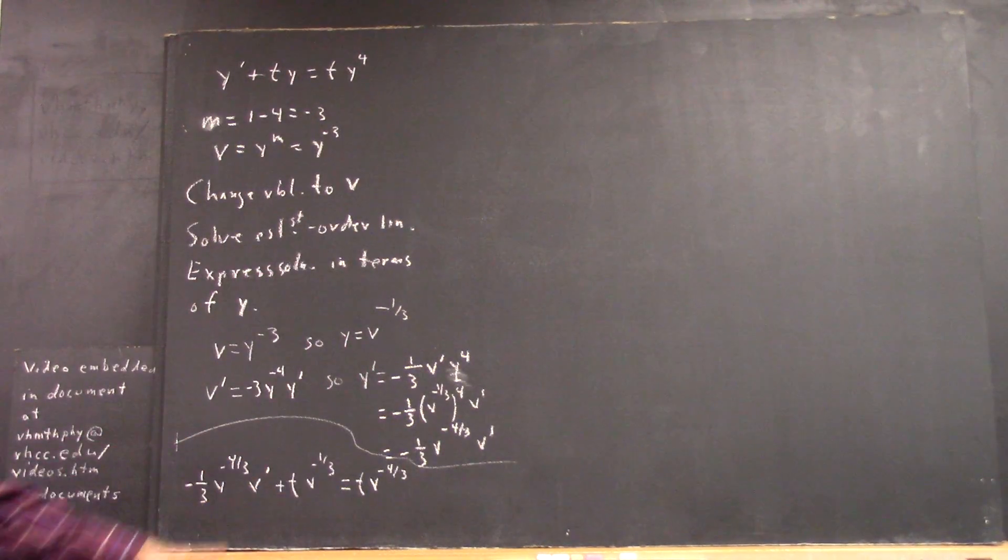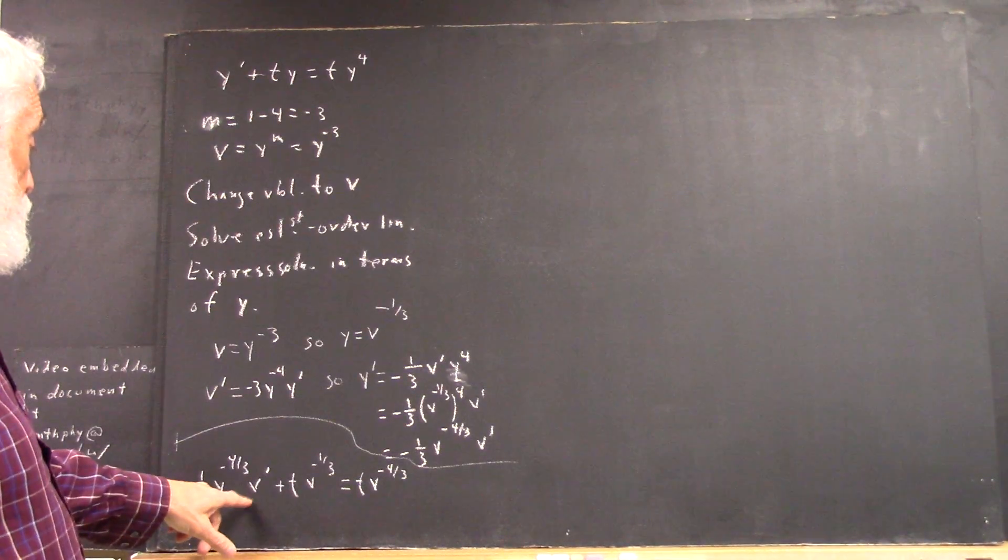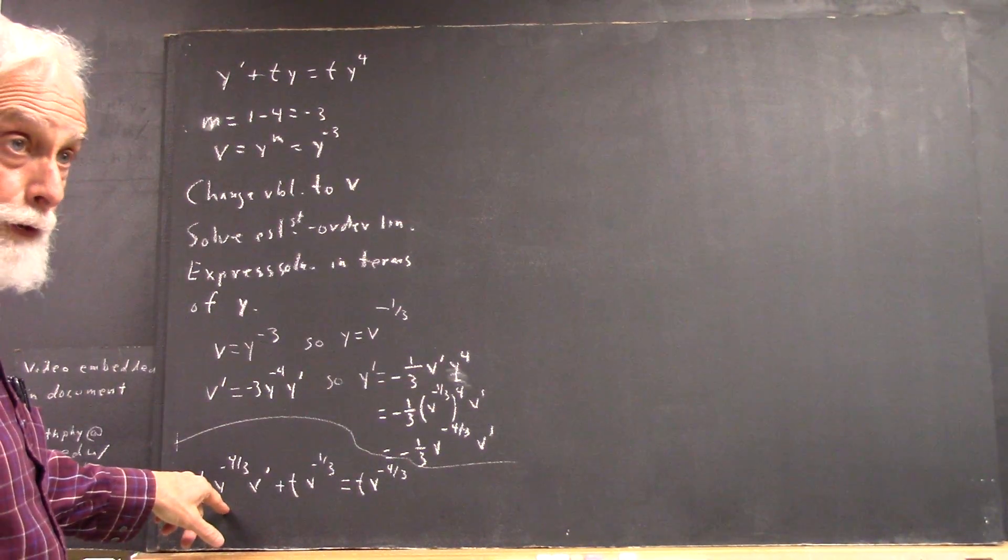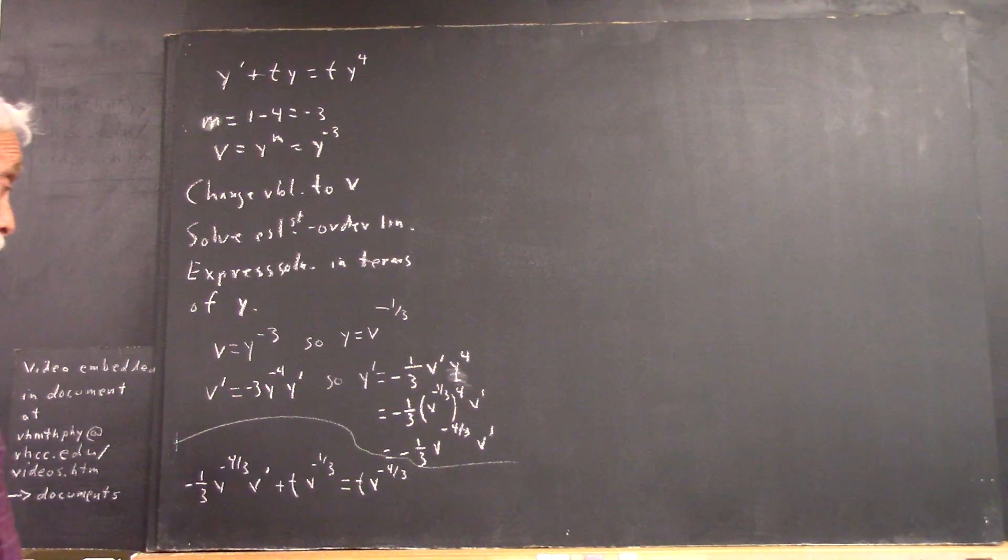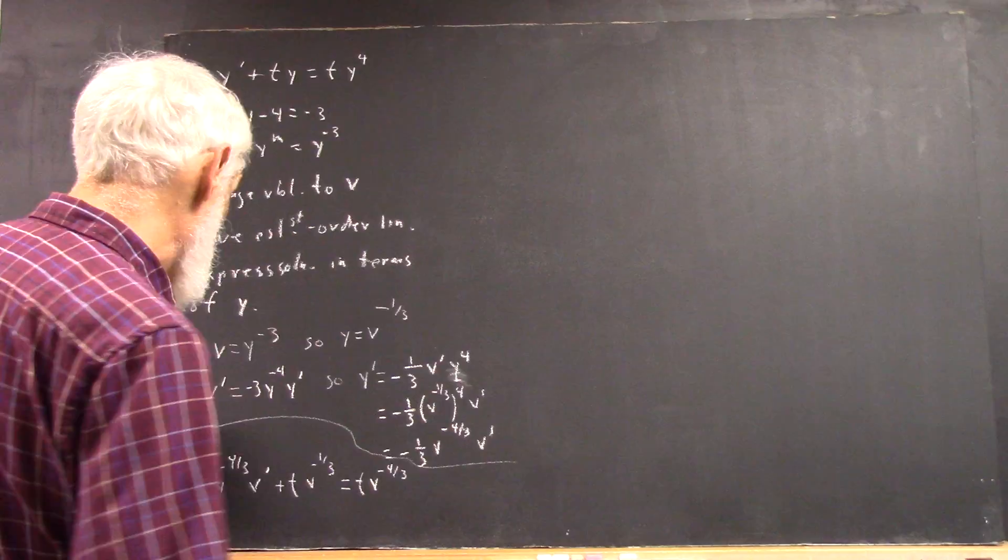So what do we do now? Well, we don't want to have anything in front of v prime, do we? So it's very easy to clear that out. We multiply everything by negative three v to the four-thirds.